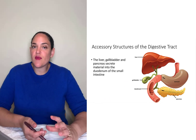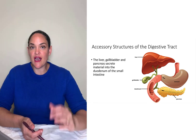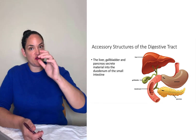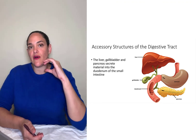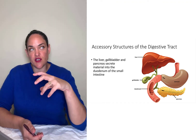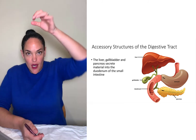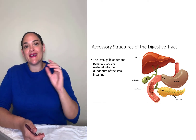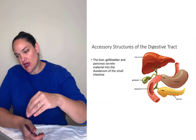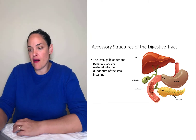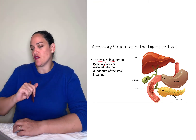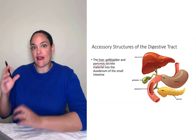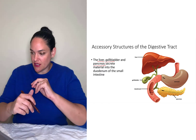In addition to the primary structures of the digestive tract — those parts within the tube — we also have what we call accessory structures of the digestive tract. These are not part of the tube, but they secrete into the tube. They include the liver, gallbladder, and pancreas. The salivary glands are also accessory structures of the digestive tract, because again, they're not part of the tube, but they secrete into the tube.